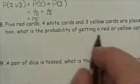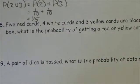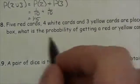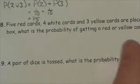Five red cards, four white cards, and three yellow cards are placed in a box. If one card is drawn from the box, I'm assuming at random here, what is the probability of getting a red or a yellow card?